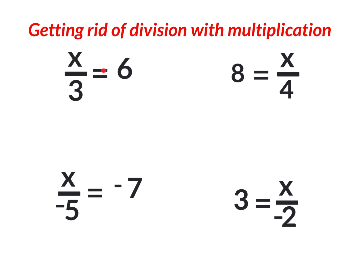The x is on the left side of the equal sign and it's not by itself — there's a divided by three. If you don't want this divided by three, you do the opposite: multiply by three. Put a multiplication dot and put the three up on top. You're not multiplying three times three; you're multiplying by three only to get rid of the division of three. So three divided by three equals one — you could say one x, but it's pointless to put a one in front of x.